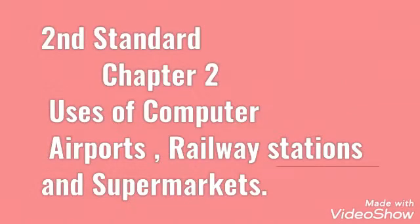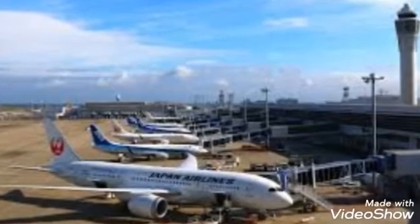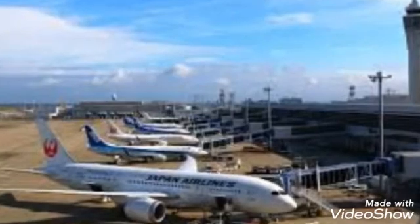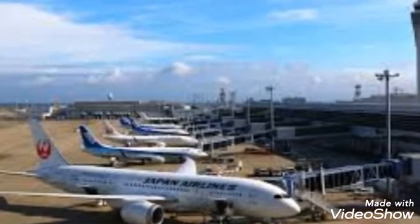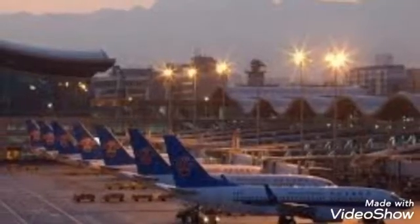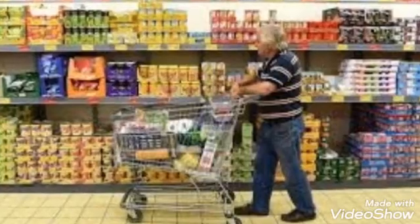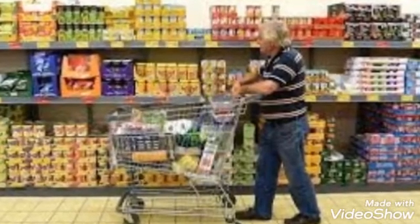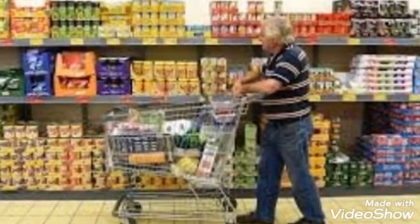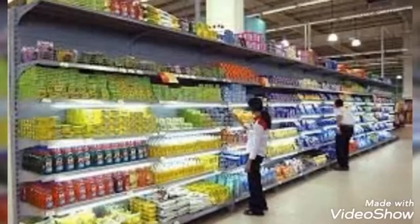Hi my dear kids, welcome back to our computer zone. Now let us continue our second chapter. We are going to study about the railway station and airport. Look at the pictures — what can you see there? There are so many airplanes. Look at the next picture — what is it? Yes, this is the supermarket. Very good!